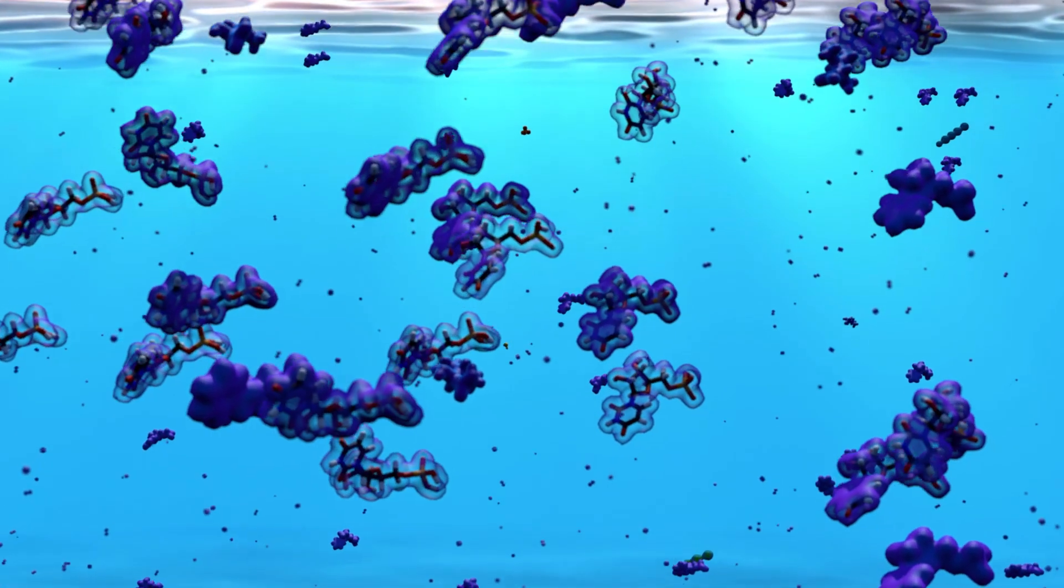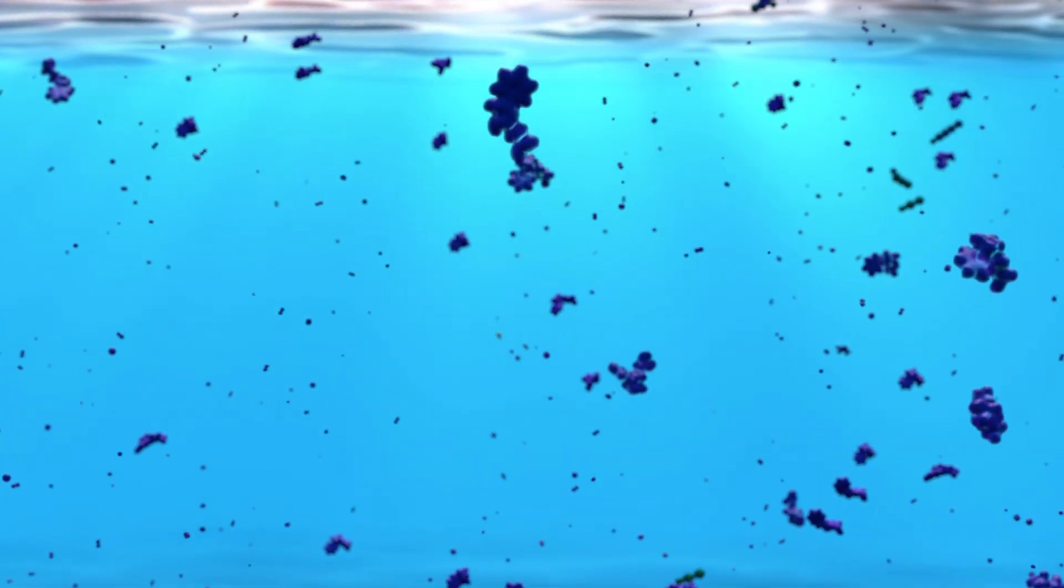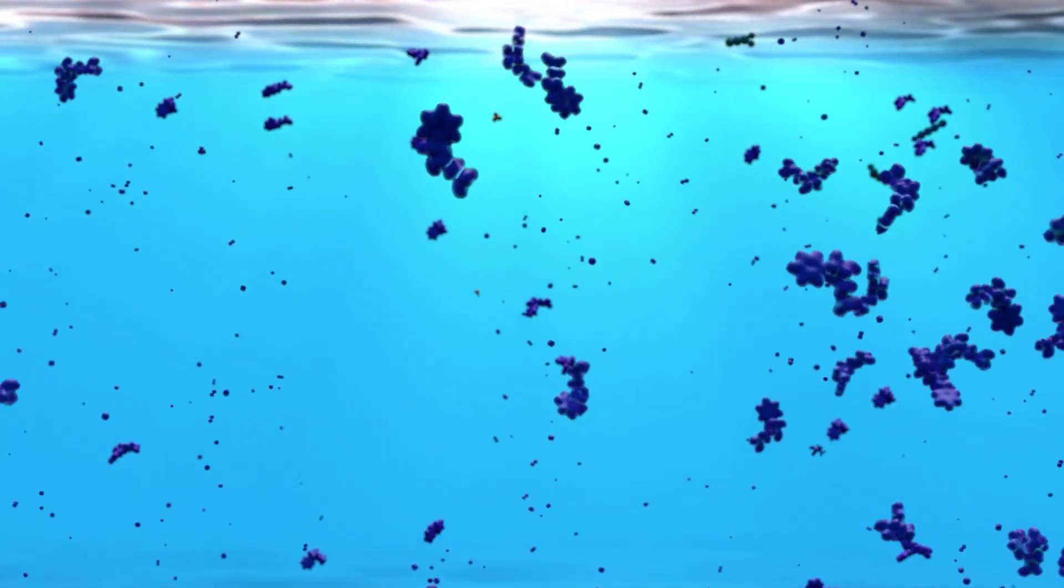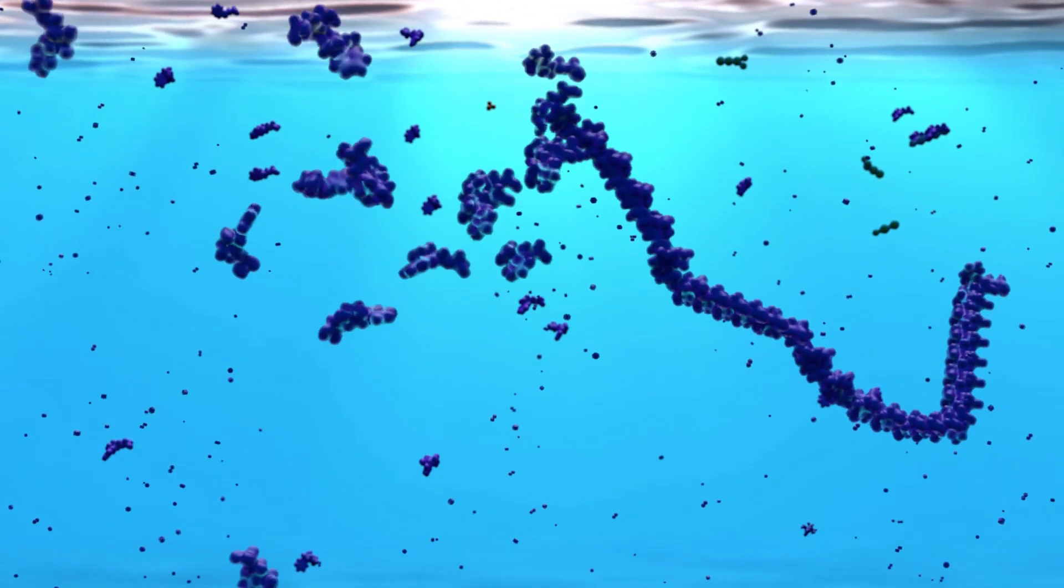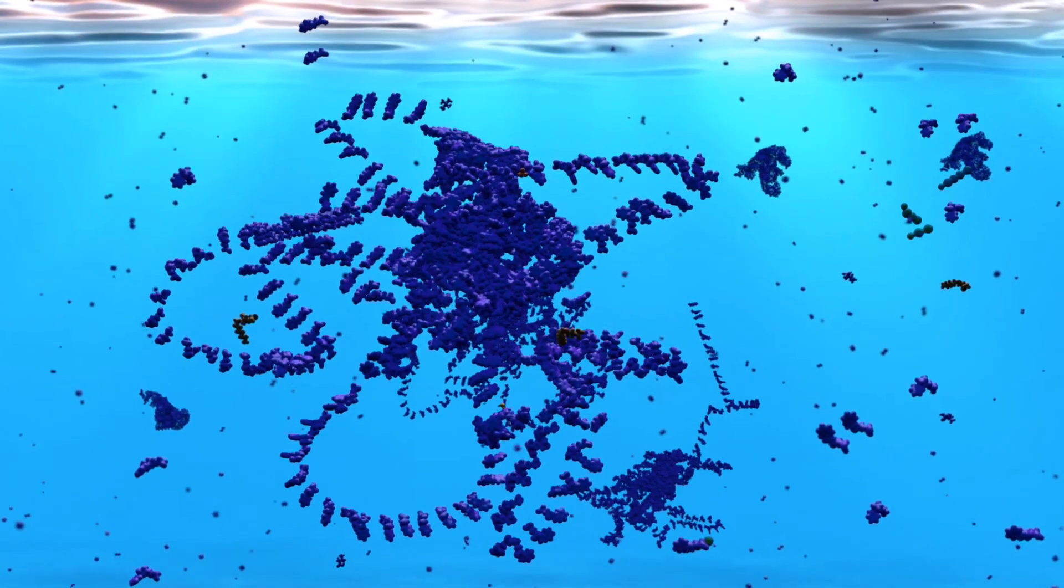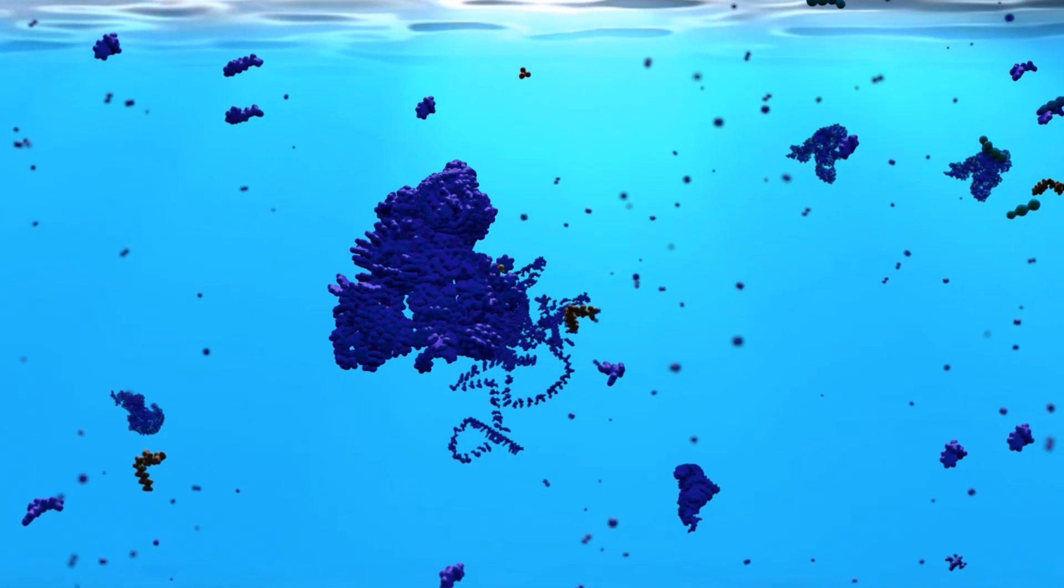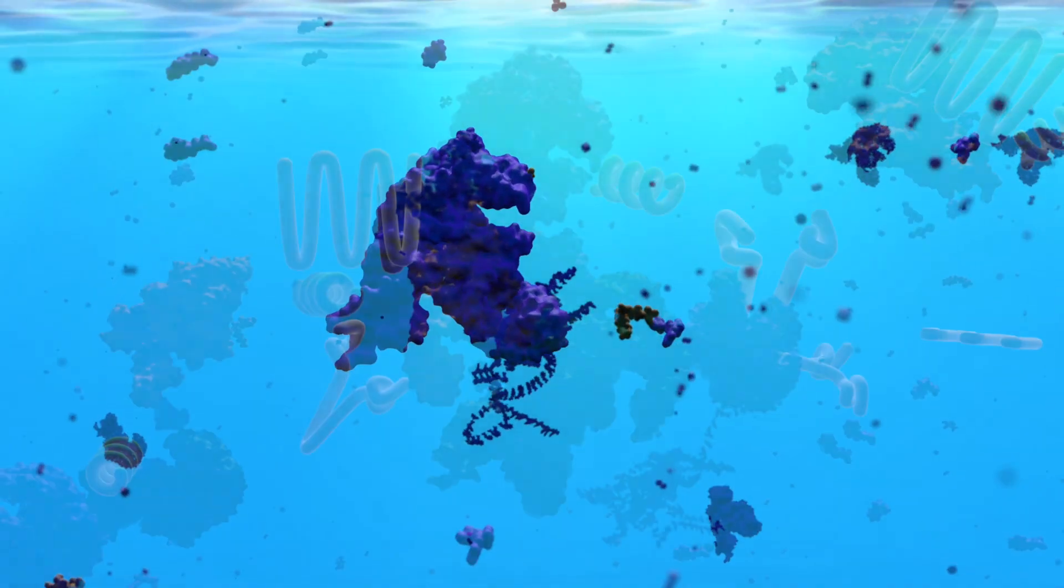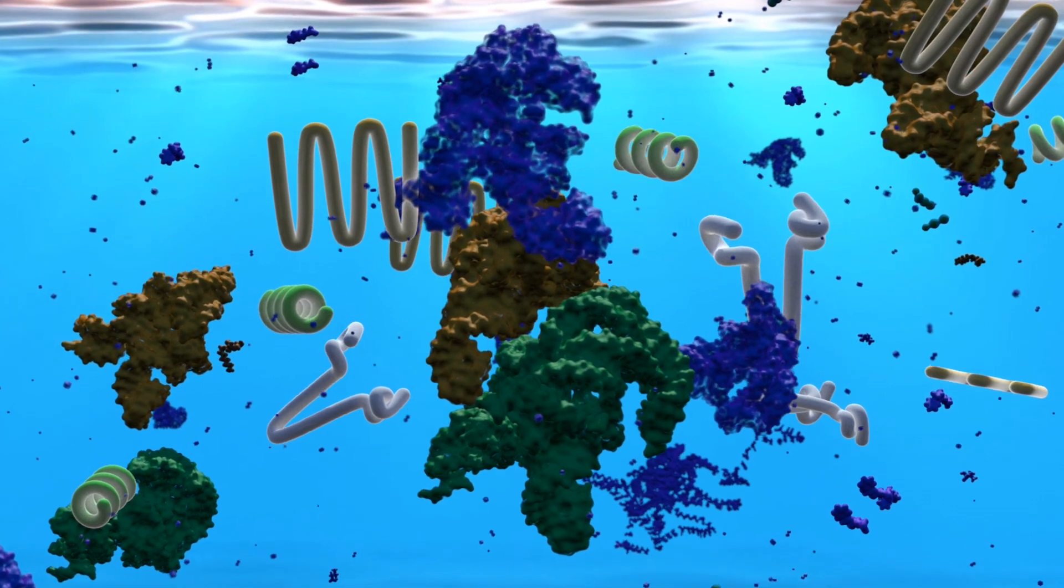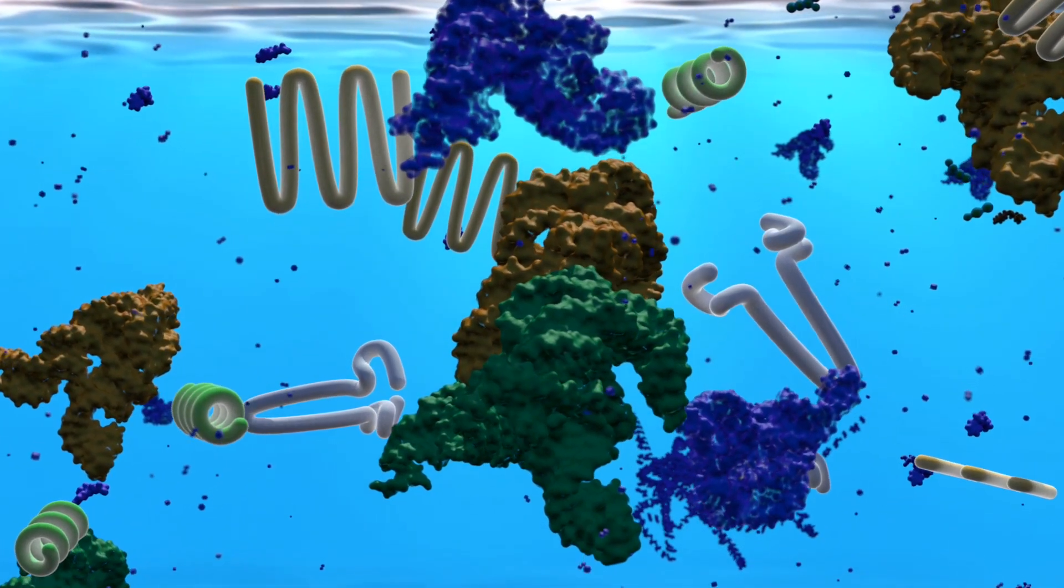Given enough time and in the right environment, these building blocks can join together into long strands forming biomolecules like RNA, a chemical cousin of DNA. Strands of RNA can fold up into molecular machines called ribozymes, capable of speeding up the chemical reactions needed for life.